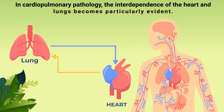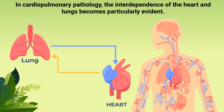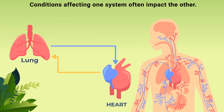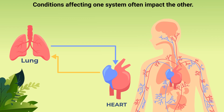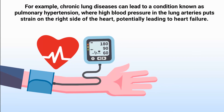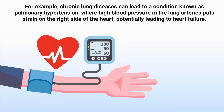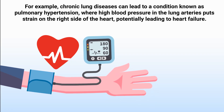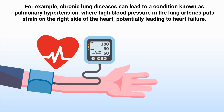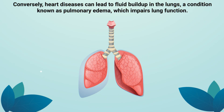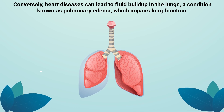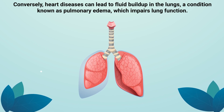In cardiopulmonary pathology, the interdependence of the heart and lungs becomes particularly evident. Conditions affecting one system often impact the other. For example, chronic lung diseases can lead to a condition known as pulmonary hypertension, where high blood pressure in the lung arteries puts strain on the right side of the heart, potentially leading to heart failure. Conversely, heart diseases can lead to fluid buildup in the lungs, a condition known as pulmonary edema, which impairs lung function.